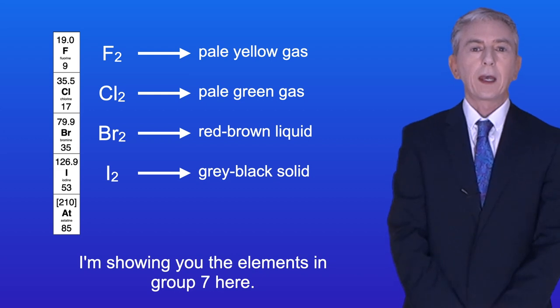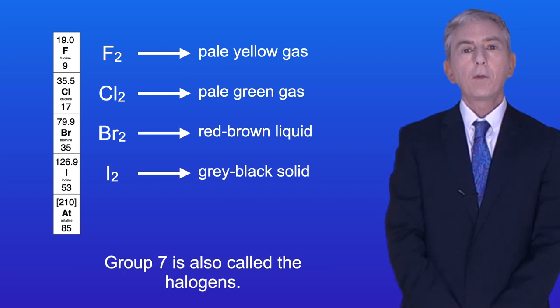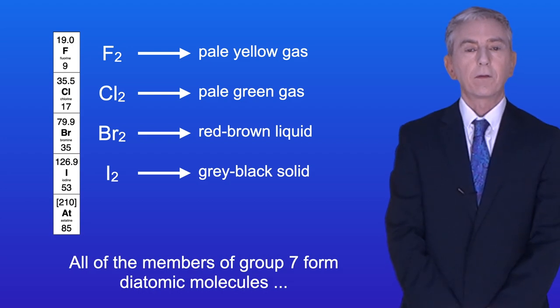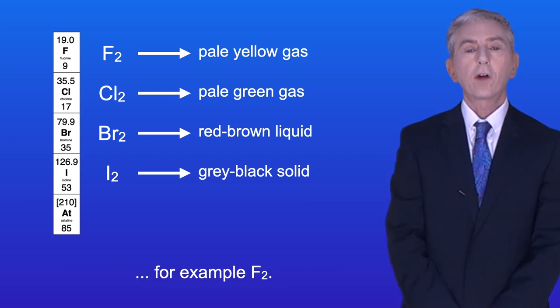I'm showing you the elements in Group 7 here. Group 7 is also called the halogens, and all of the members of Group 7 form diatomic molecules, for example F2.